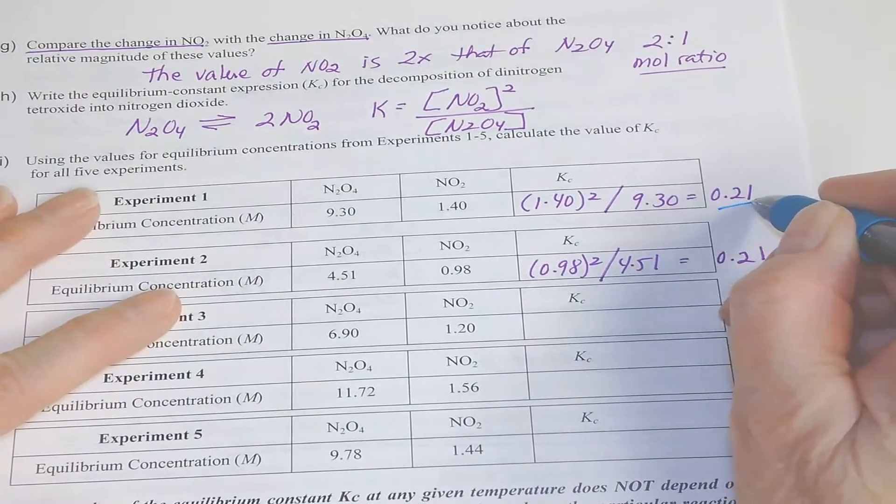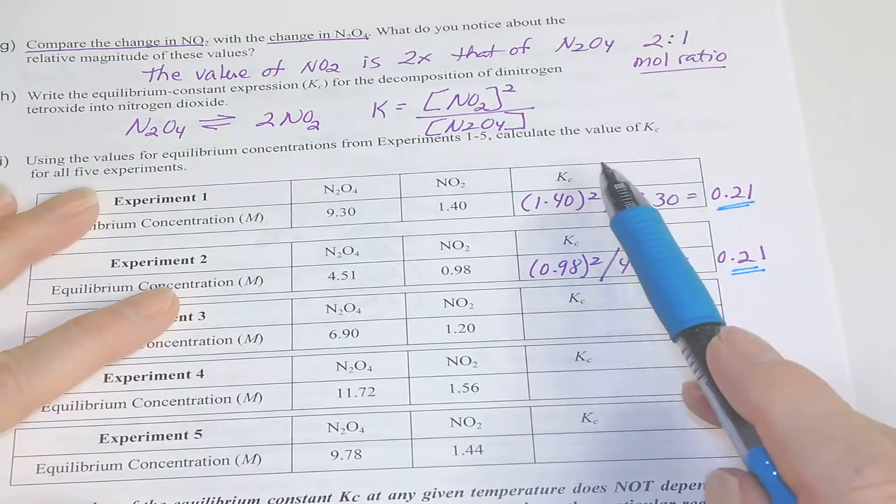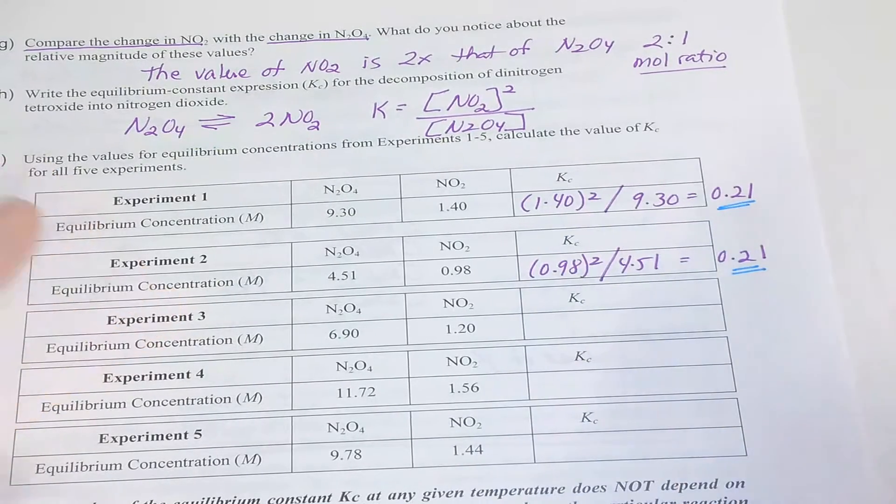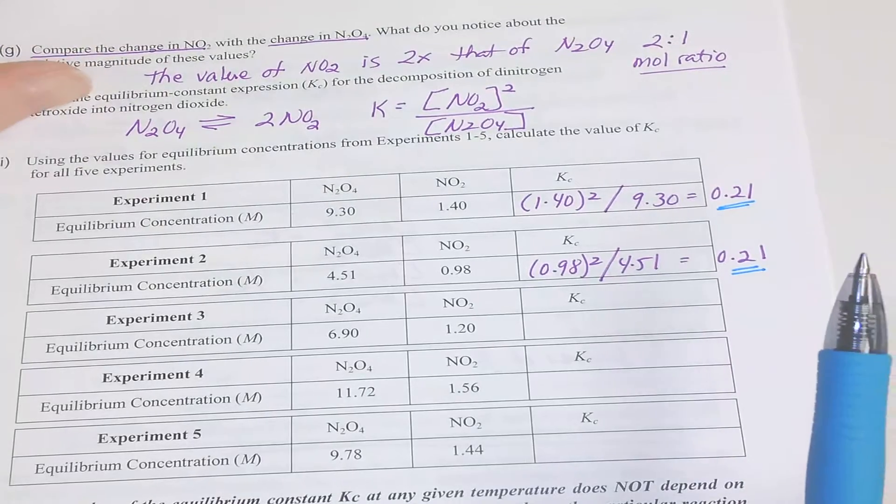You should see within some experimental error that you have the constant, the equilibrium constant of 0.210.